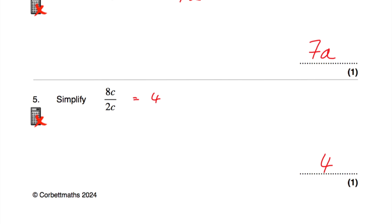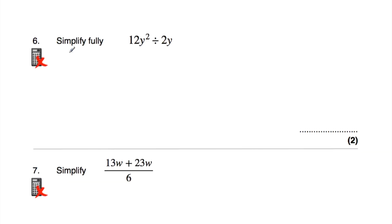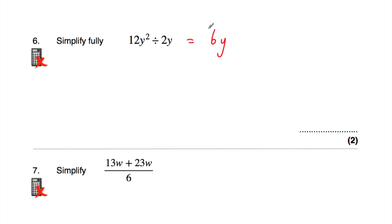Question number 6 says simplify fully 12y squared divided by 2y. Let's divide the numbers: 12 divided by 2 is 6. Then y squared divided by y — if you do y times y you get y squared, so dividing y squared by y leaves just y. So the answer is 6y. Checking: 6y multiplied by 2y gives 12y squared. ✓